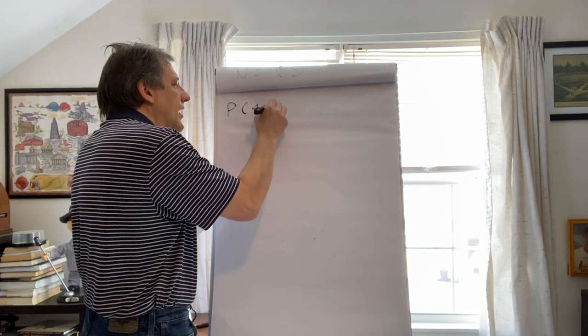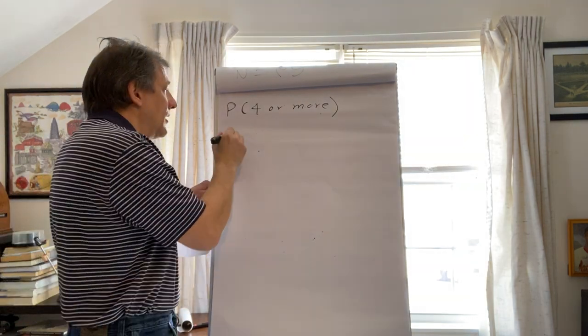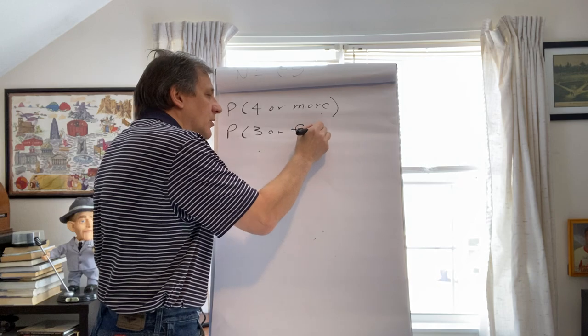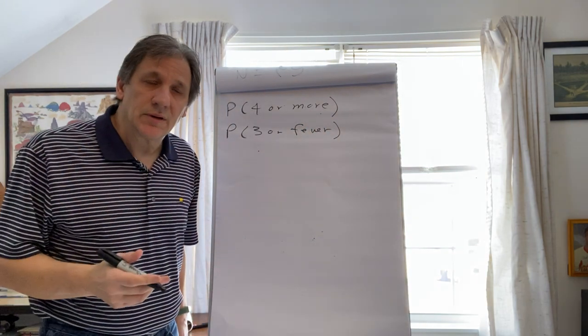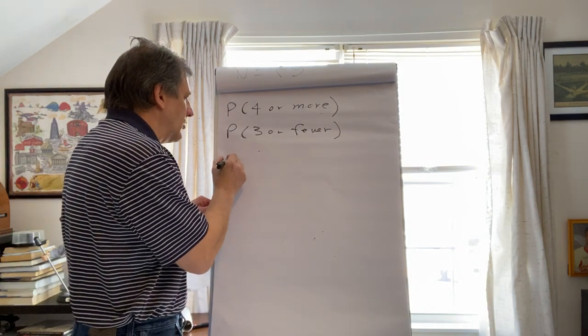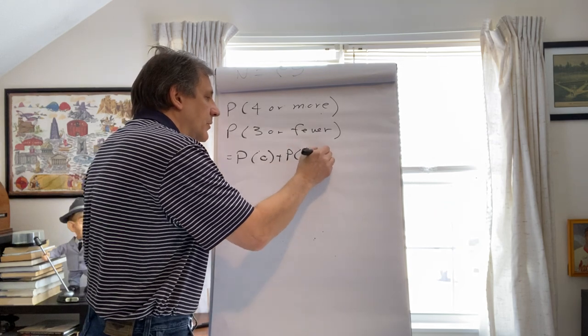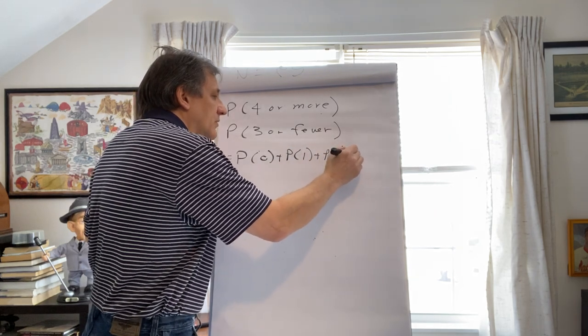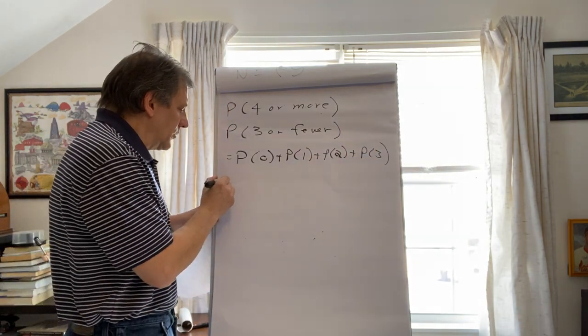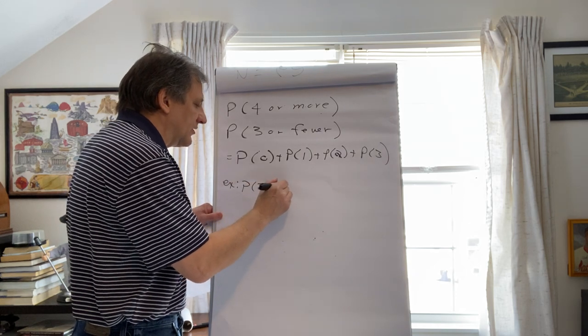So, we could go ahead and find the probability of four or more, but we'd be there all day. But instead, what if we find the probability of three or fewer? Well, that's not so hard, even longhand. The probability of three or fewer is the probability of zero plus the probability of one plus the probability of two plus the probability of three. So, for example, what's the probability? I'm just going to pick out one of these. Two successes.